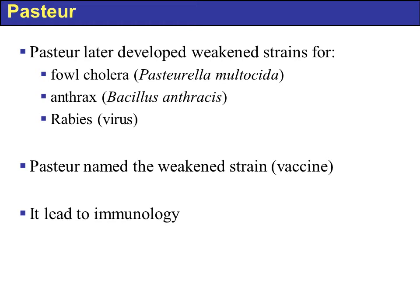Pasteur named these weakened strains of microbes 'vaccines.' The concept was to take a microbe like Bacillus anthracis and instead of giving a patient the live bacteria — which would kill them — give them a weakened strain. The patient would not develop the actual sickness, and that is called a vaccine. This creation of weakened strains evolved into a new field called immunology.